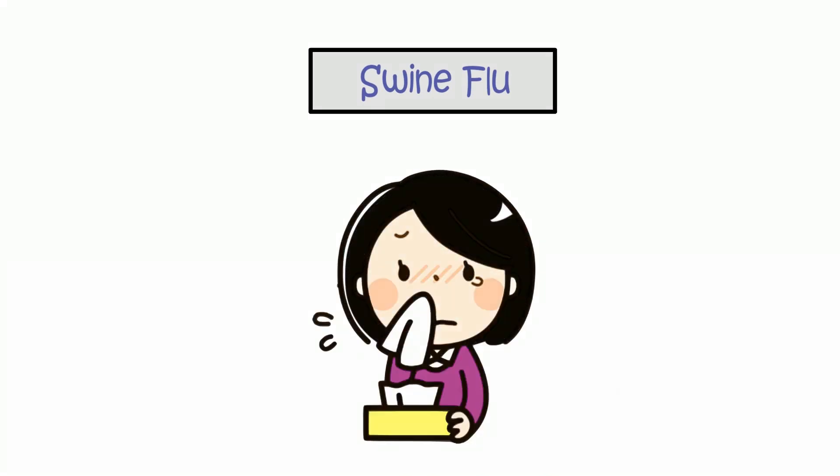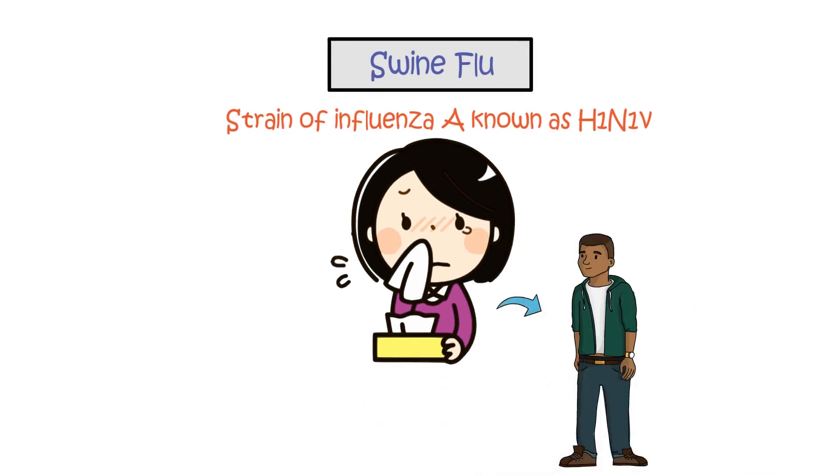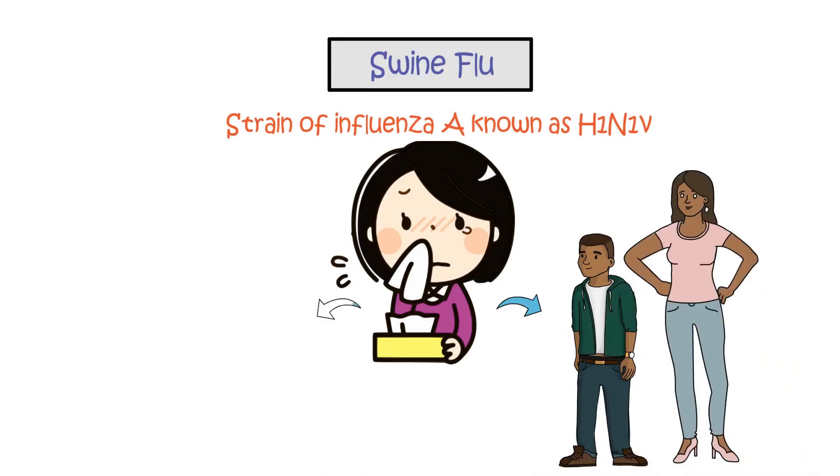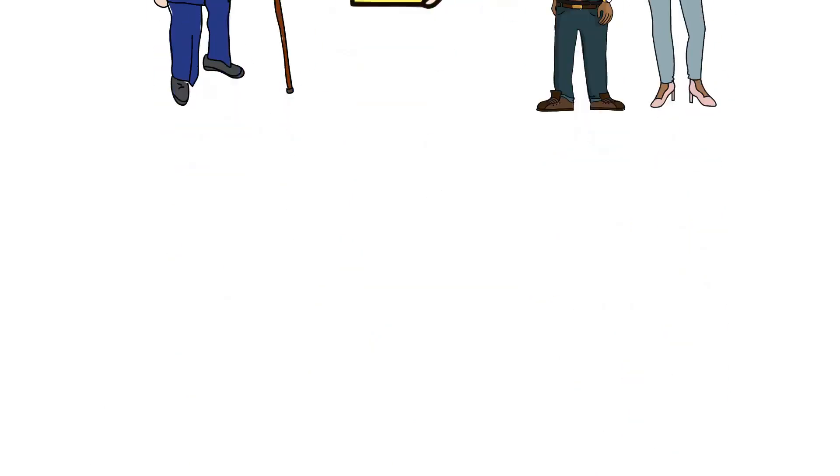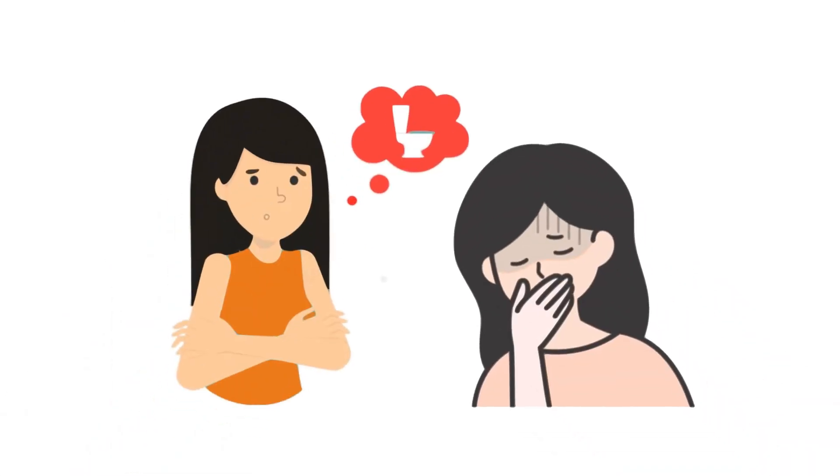Swine Flu. Swine flu, caused by a specific strain of influenza A, known as H1N1V, tends to impact children and young adults more frequently than individuals over 60 years of age. Most individuals with swine flu experience mild flu-like symptoms, often accompanied by nausea and/or diarrhea.